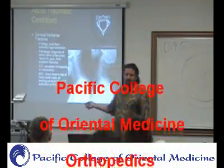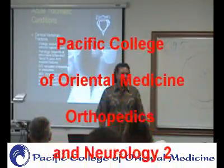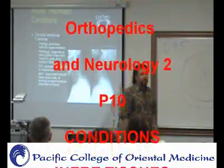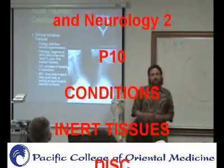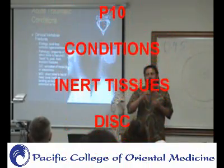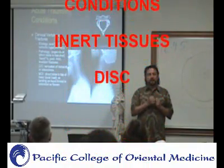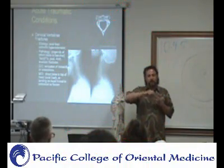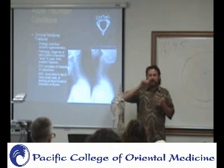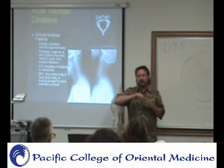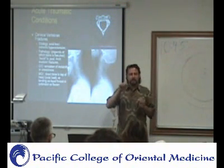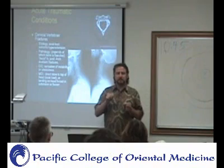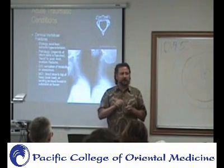Do you want to know what an avulsion fracture is? Avulsion is basically where there's a tendon or a ligament or something that attaches to the bone, and instead of the ligament or tendon tearing, the piece of bone breaks off. So it's an avulsion fracture.